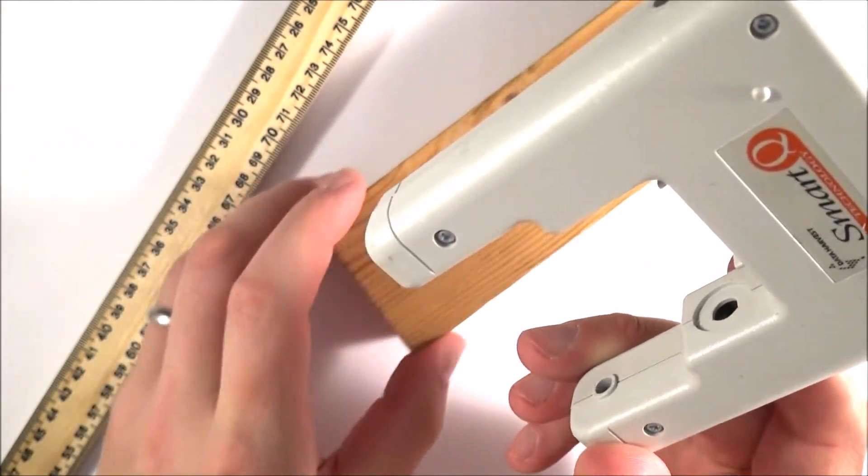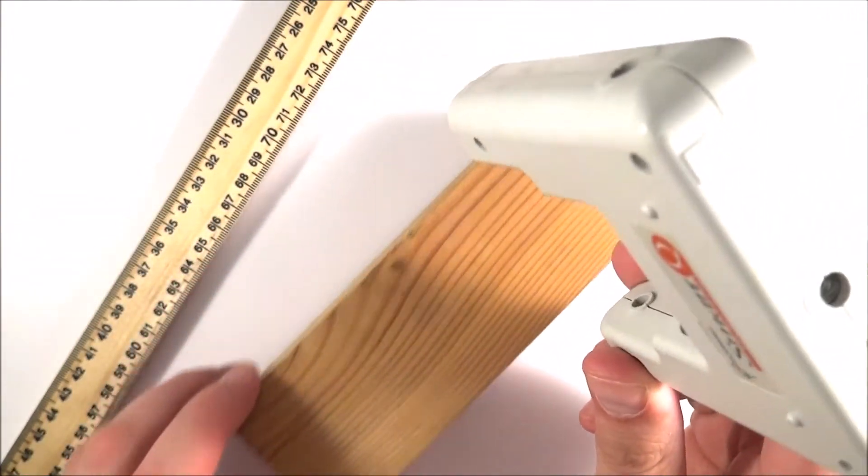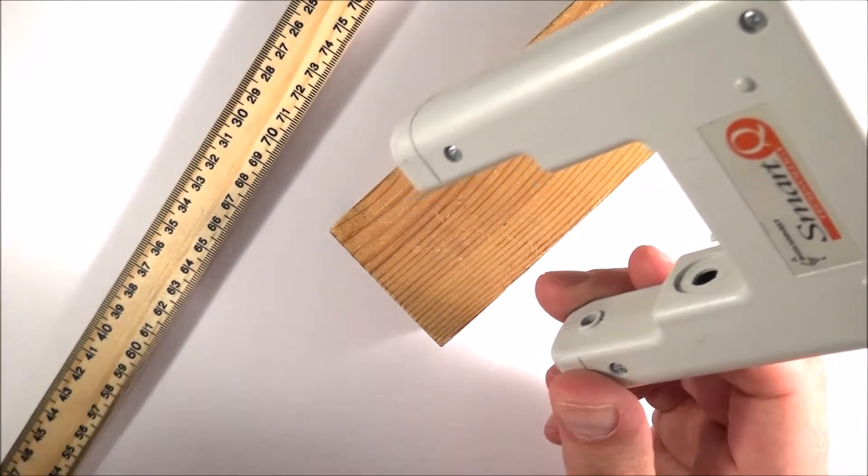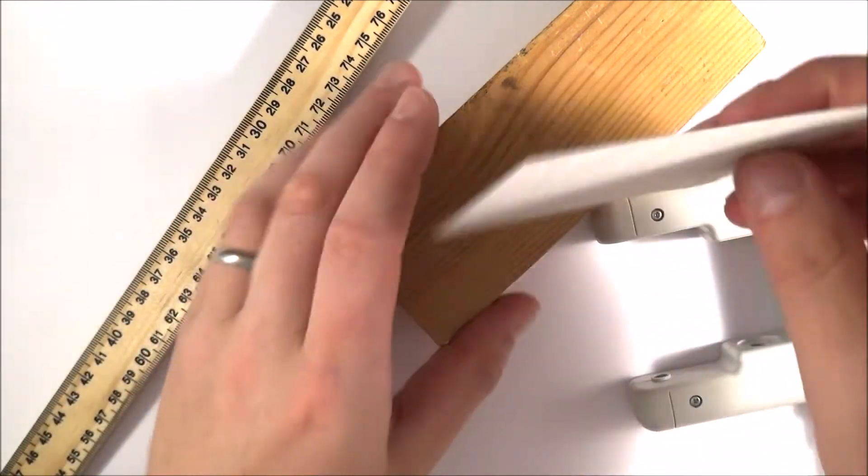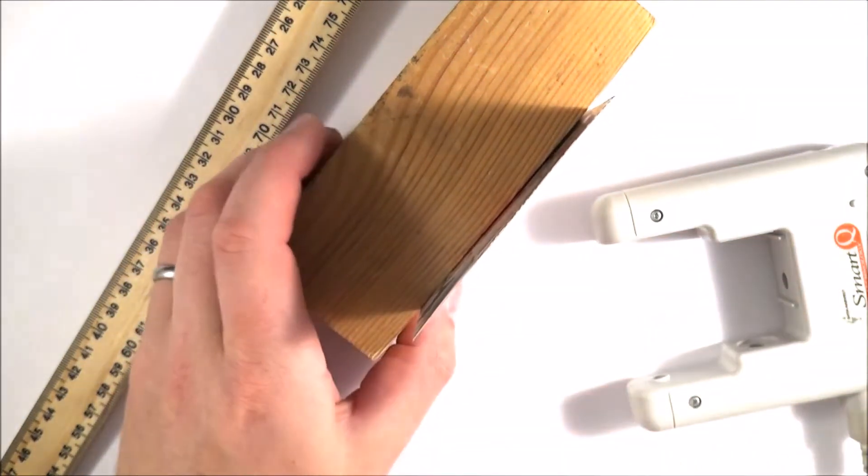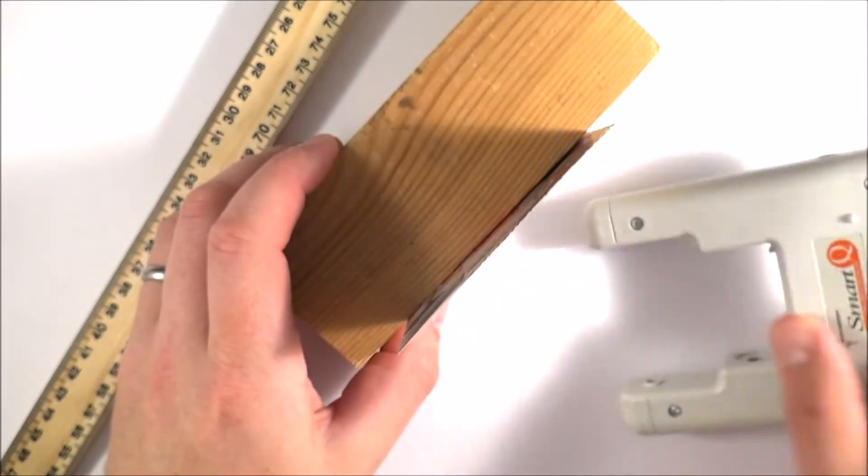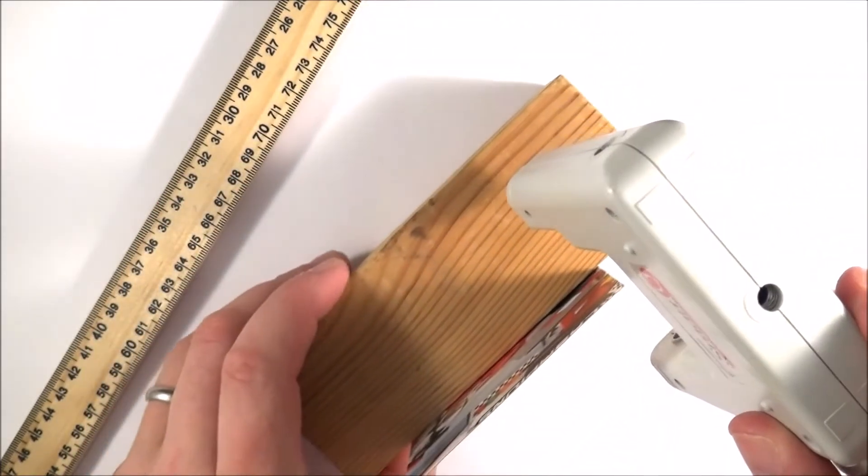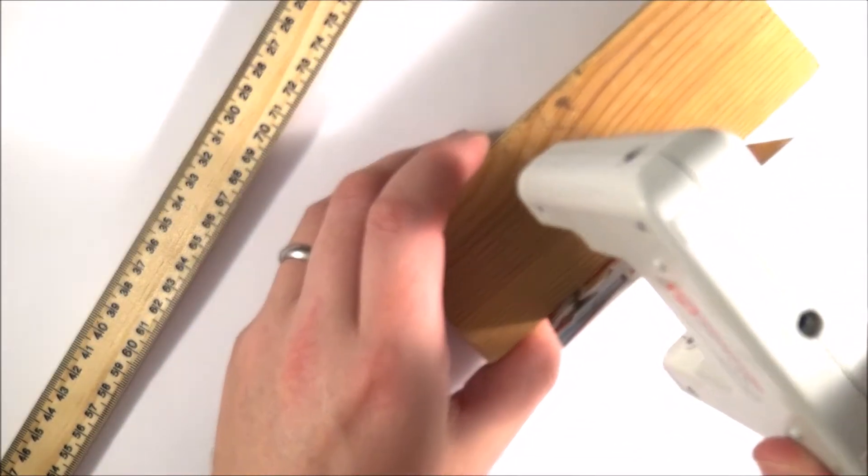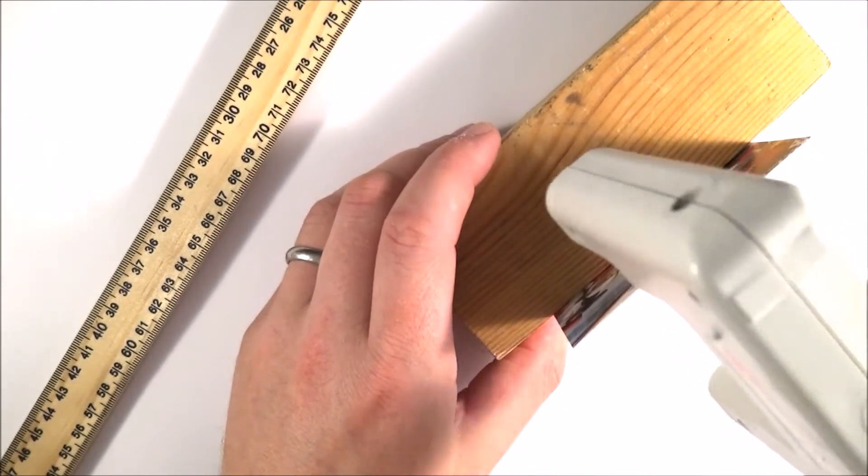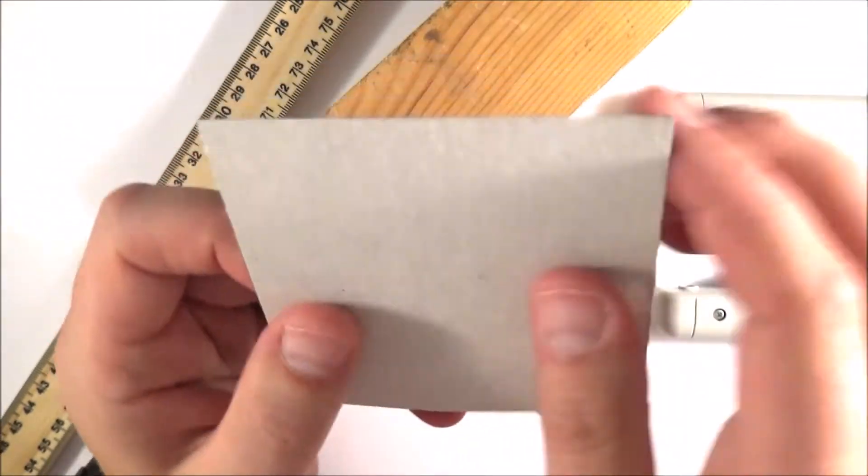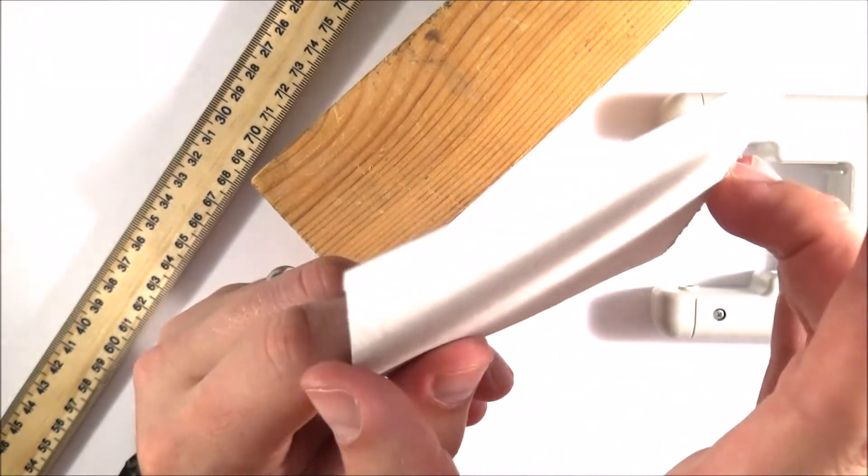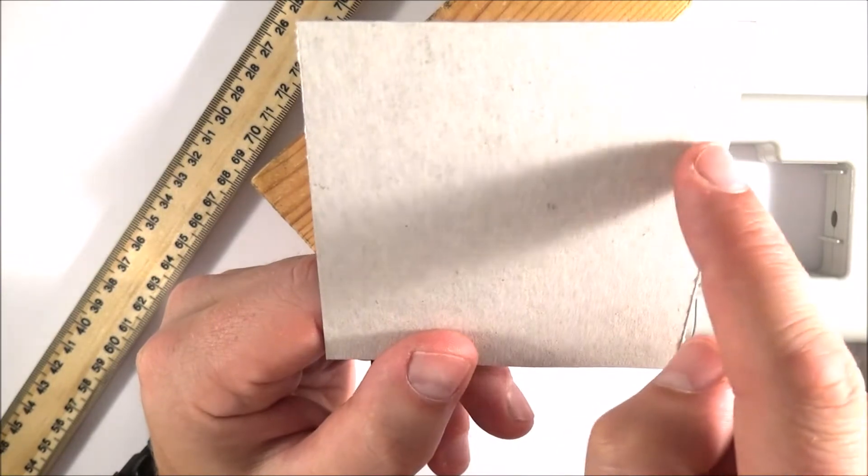So what we're going to do is in order to work out how fast this block is traveling we use something called an interrupt card. This card here, it's just a piece of card and what we can do is we can attach it to the side of the block of wood. As this block of wood then passes underneath the light gate, what we're doing is we are timing how long it takes for this known length of card to pass through. I cut this on the guillotine so we've got nice straight parallel sides and I measured this out to be 100 millimeters across.